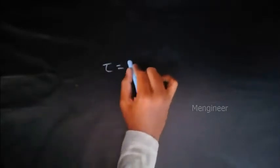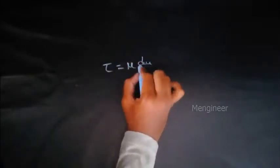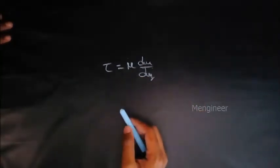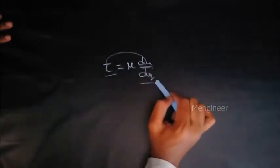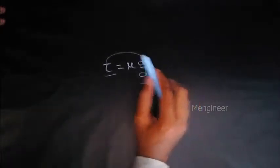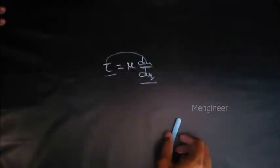Newton gave this equation: tau equals mu times du by dy. You are all aware of this. So now let's study the relation between these two, that is shear stress and du by dy. I will be plotting the graph and explaining the different types of fluid in this video.